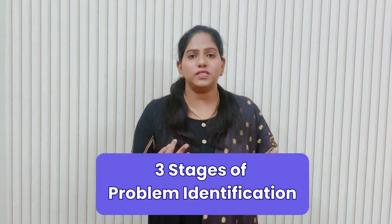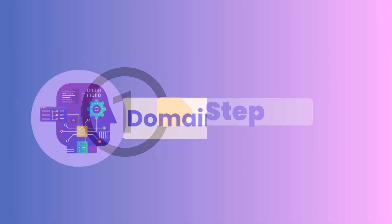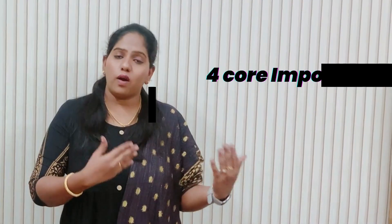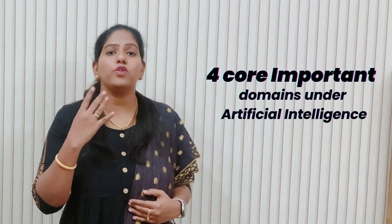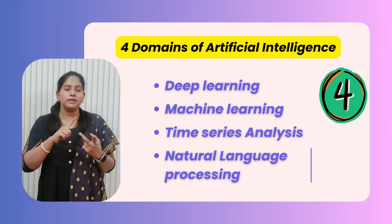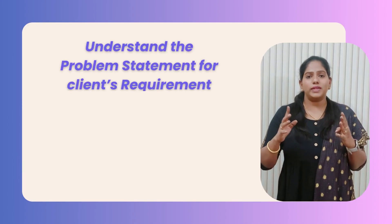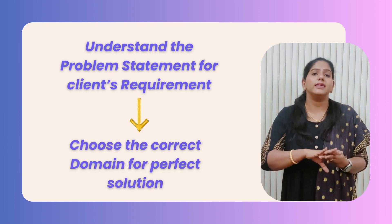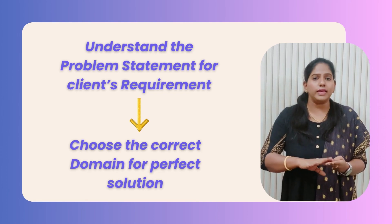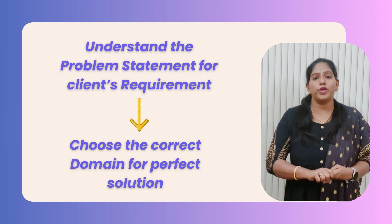There are three stages of problem identification in artificial intelligence. As a first step, domain selection — I have already explained this in a series of videos. Artificial intelligence has four core important domains: deep learning, machine learning, time series analysis, and natural language processing. First, you ask a client for a problem statement, then we choose the domain to find a solution.